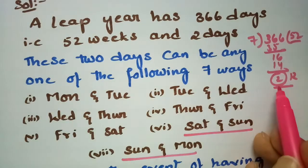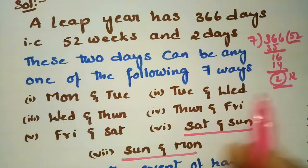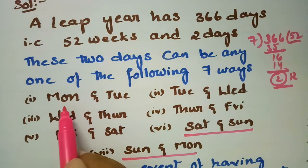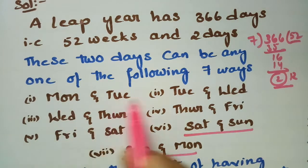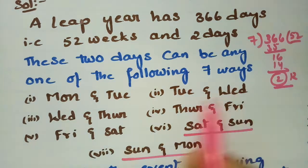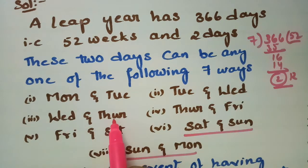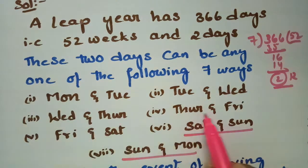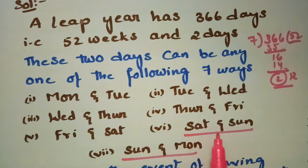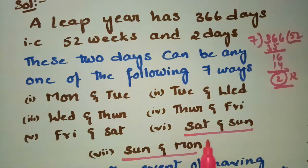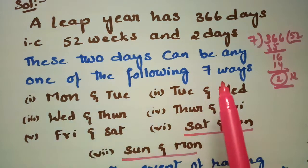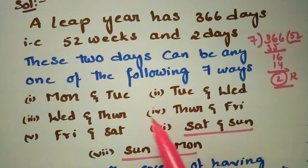These 2 days can be the consecutive pairs: Monday-Tuesday, Tuesday-Wednesday, Wednesday-Thursday, Thursday-Friday, Friday-Saturday, Saturday-Sunday, or Sunday-Monday. So there are a total of 7 possible ways.